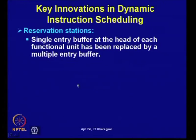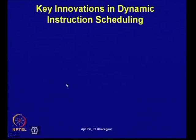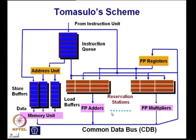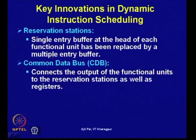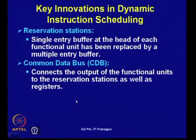Let me highlight important features of the different functional units. Reservation stations have replaced the single-entry buffer at the head of each functional unit with multiple-entry buffers. The common data bus connects the output of functional units to both the reservation stations and the registers, so parallel writing takes place simultaneously in registers and reservation station buffers, channeled to appropriate stations waiting for data.